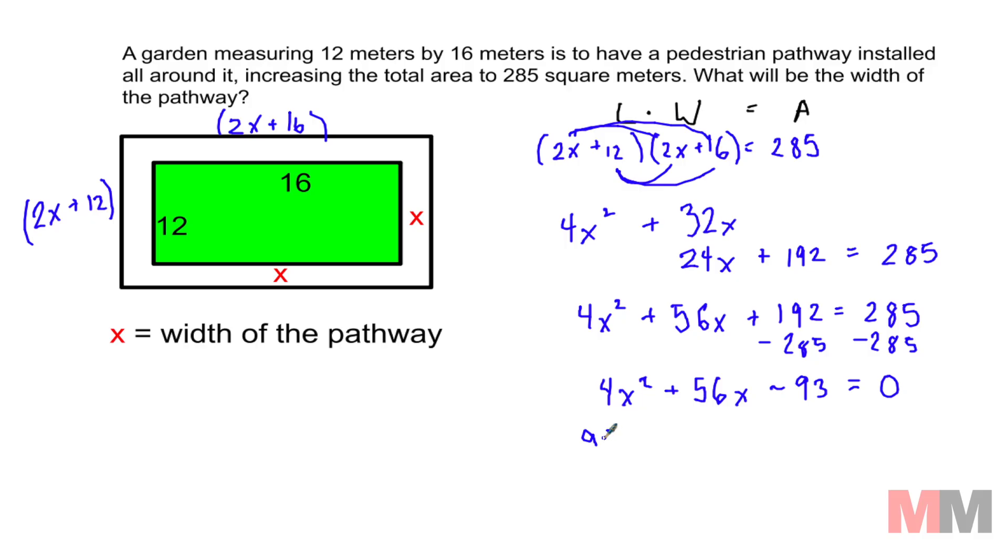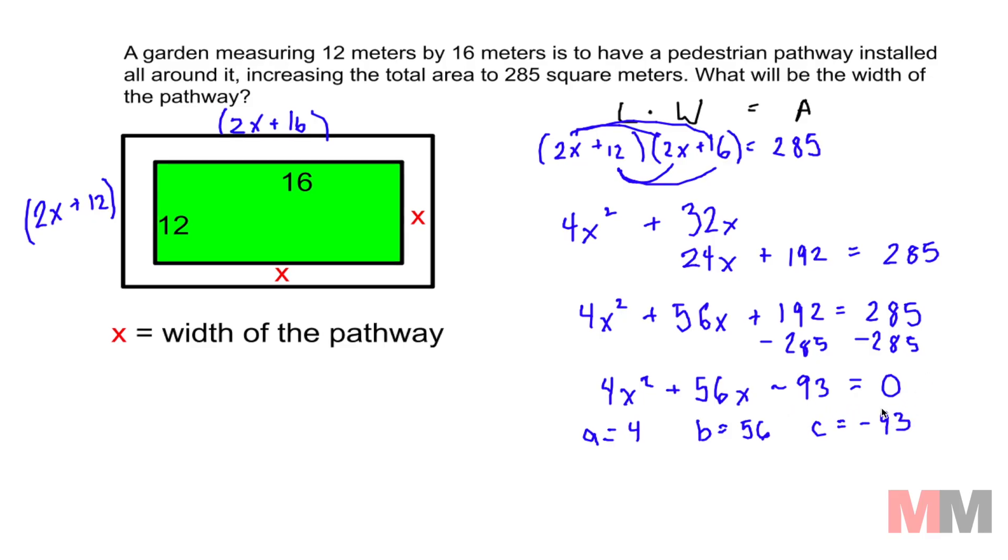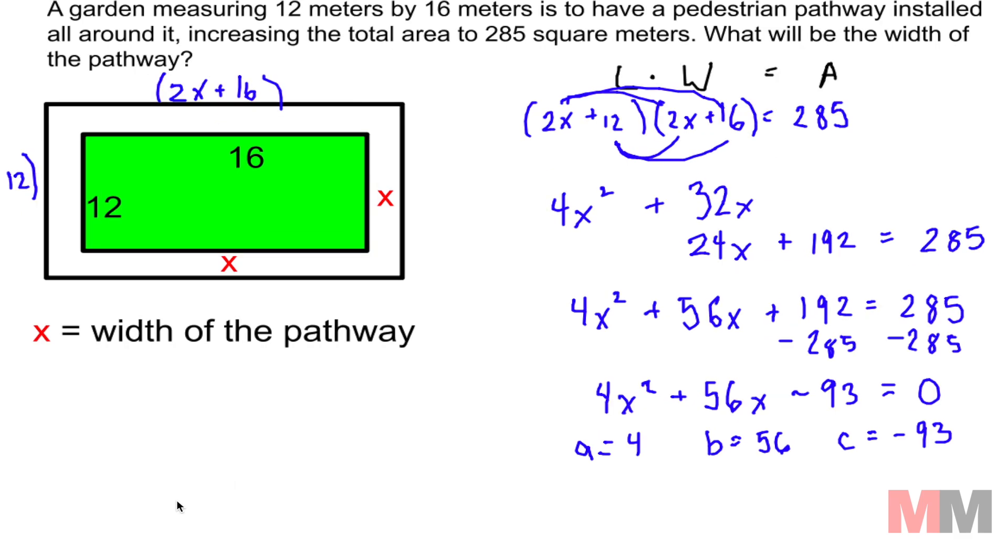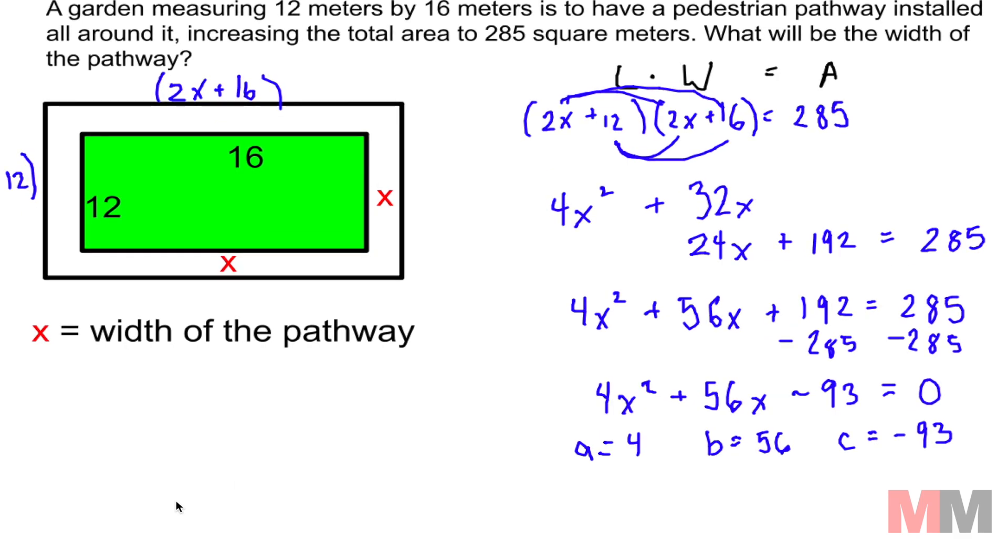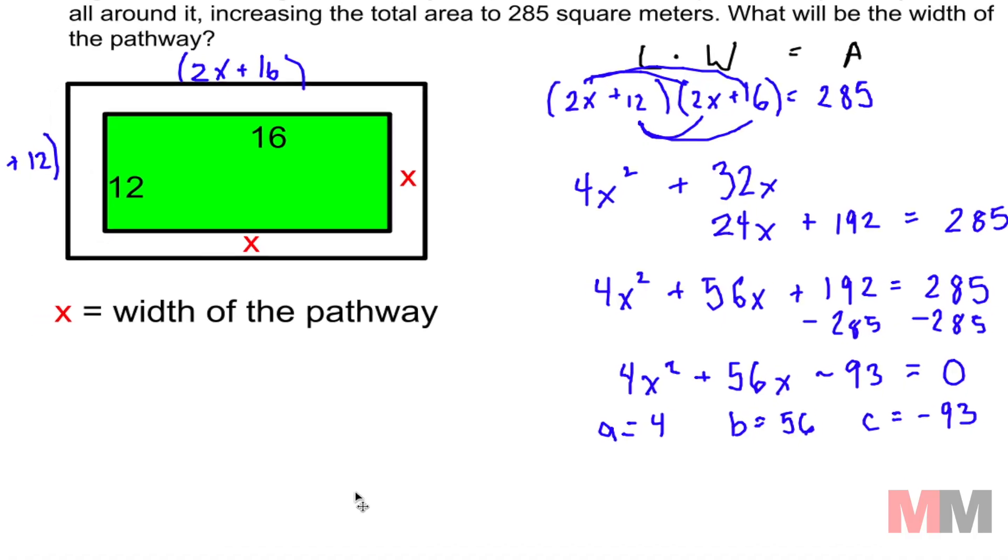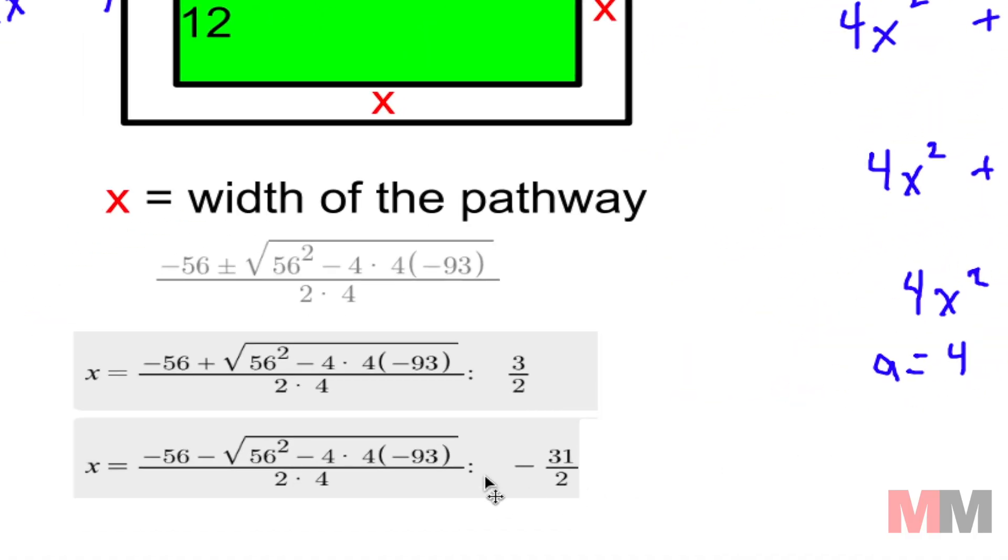Now I know my a is 4, my b is 56, and my c is negative 93. You can put that into the quadratic formula. You don't want to sit there and factor that. I think it's easier to use the quadratic formula. And if you don't know how to use that, I have a video that you can look up in my channel. But it will look something like this. And you'll have two answers. One will be 3 halves and one will be negative 31 over 2.